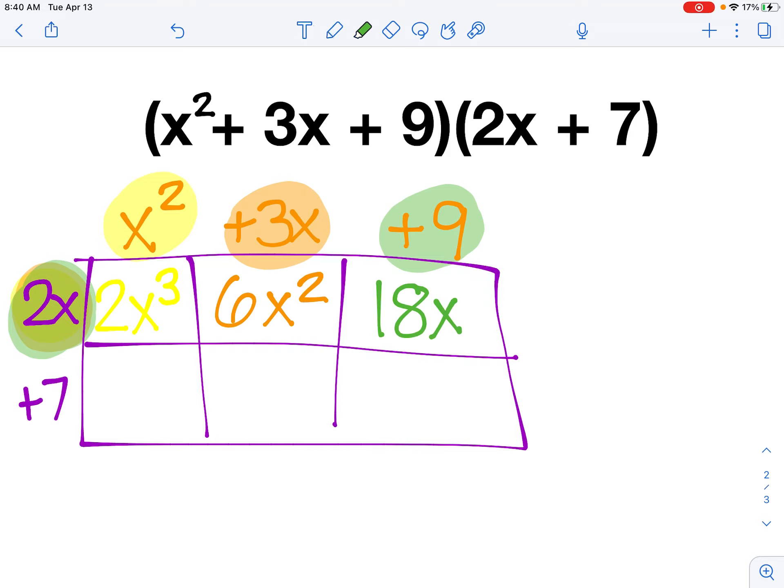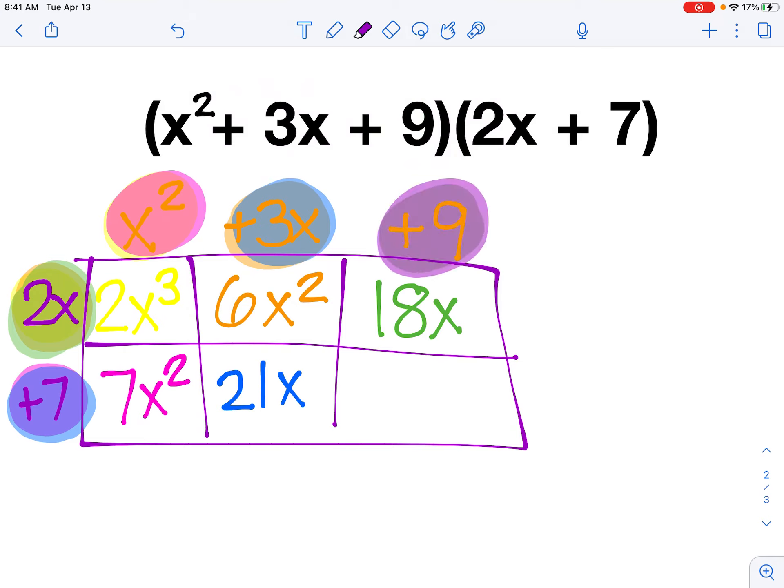So now I've multiplied my 2x by each piece of that polynomial. Now I'm going to repeat the whole process but multiply by 7 this time. So this time, I have x squared times a positive 7. That's going to give me 7x squared. Next up, I have 3x times that 7. So 3 times 7 would give me 21 with an x. And finally, to wrap the whole thing up, I have my positive 9, and I'm multiplying it by a positive 7. So I'm going to multiply 7 times 9, and I'm going to get 63.